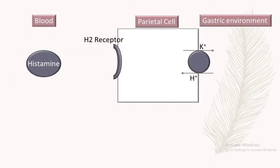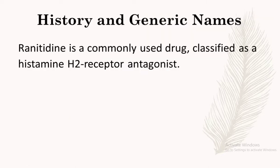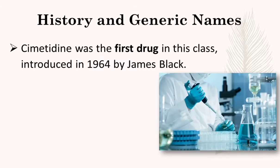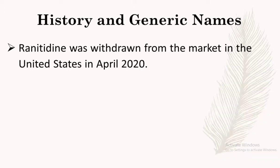Ranitidine, or H2 antagonists, inhibit or block the binding of histamine to its receptor present in the gastric parietal cell. Ranitidine is also known as an H2 blocker. Cimetidine was the proto drug of this class, introduced in 1964 by James Black. Other drugs falling under this category are ranitidine, famotidine, and roxatidine.